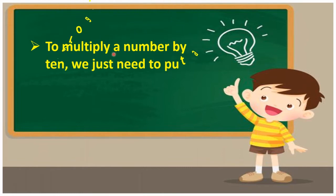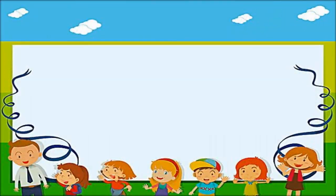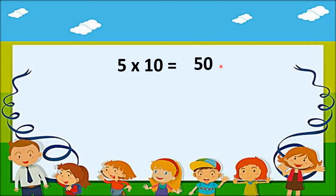To multiply a number by 10, we just need to put a 0 after it. For example, 5 multiplied by 10. To find the answer, we can multiply 5 by 1 and place a 0 after the product. So 5 ones are 5, and we just place a 0 — that is 50.